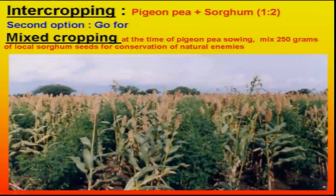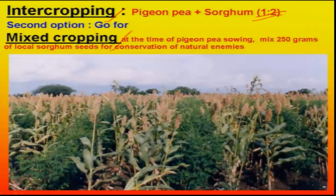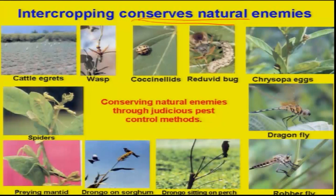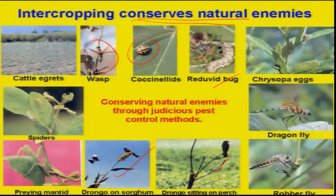Another cultural practice is intercropping or mixed cropping of pigeon pea with sorghum. If it is intercropping, a 1:2 ratio is recommended. If a farmer wants mixed cropping, we normally advise 250 grams of sorghum seeds to be mixed with the red gram for sowing. Intercropping or mixed cropping mainly helps in the conservation of natural enemies — various predatory species like wasps, coccinellids, reduviid bugs, chrysopa, and predatory birds like black drongo play a significant role in reducing pest population.